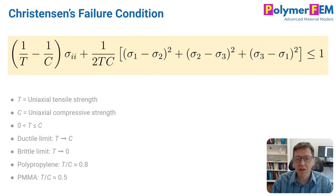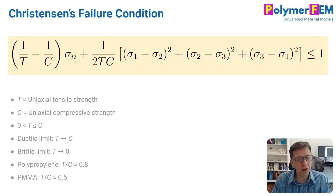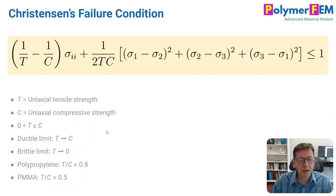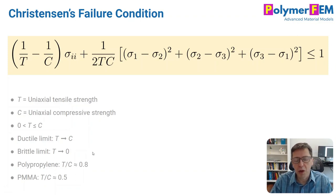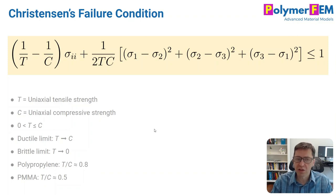This is the Christensen failure condition. It's basically a Mises stress term, plus an additional term, and it introduces two parameters: T, the tensile strength, and C, the uniaxial compressive strength. These two parameters control the whole failure envelope of the material. There are relationships where T is less than C, defining ductile and brittle limits. For many polymers, according to his book, T divided by C is around one half or perhaps a little bit larger.